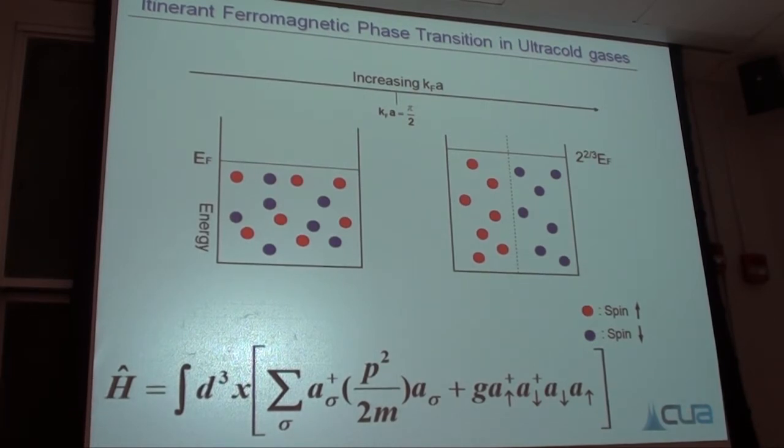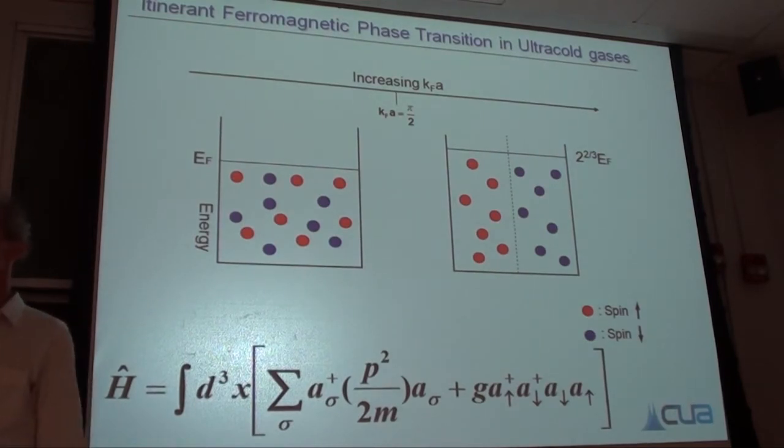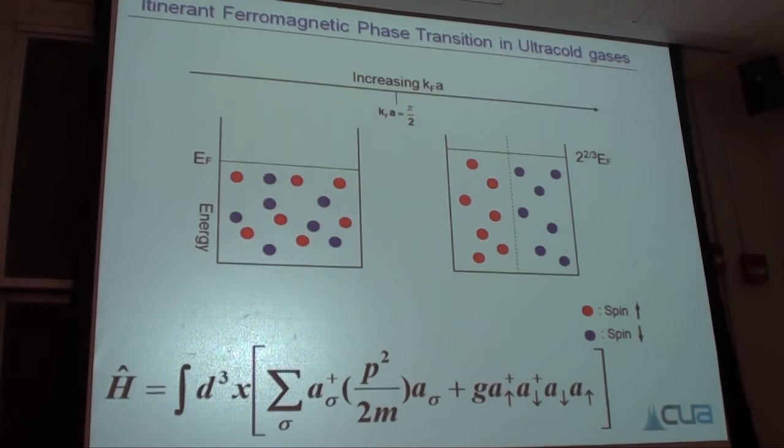If those repulsive interactions get stronger and stronger, there's always one escape route for the fermions. They can say enough with those repulsive interactions, we form two domains. For people who are familiar with two component systems, they can be either miscible or immiscible. The two systems phase separate, they avoid each other.